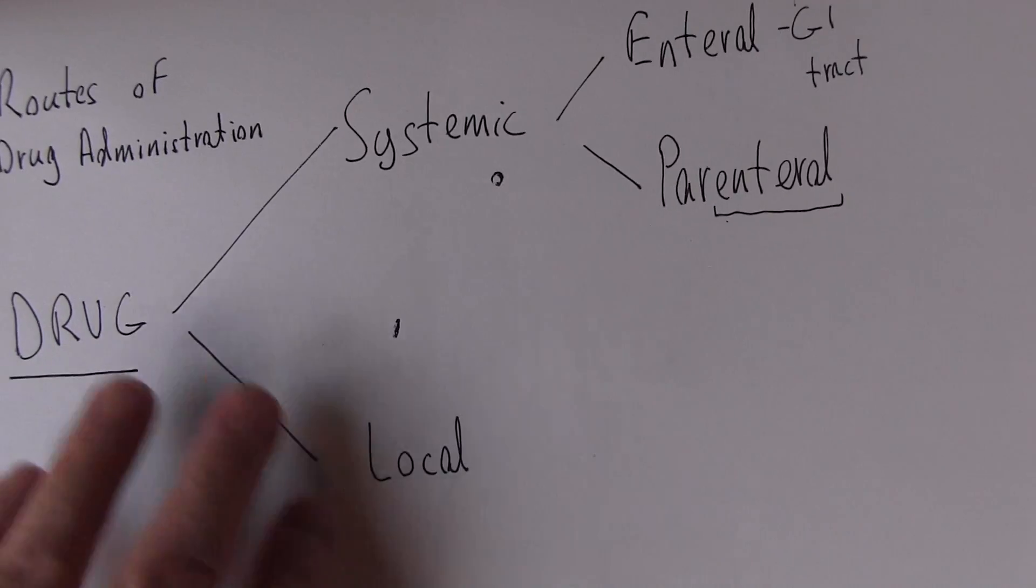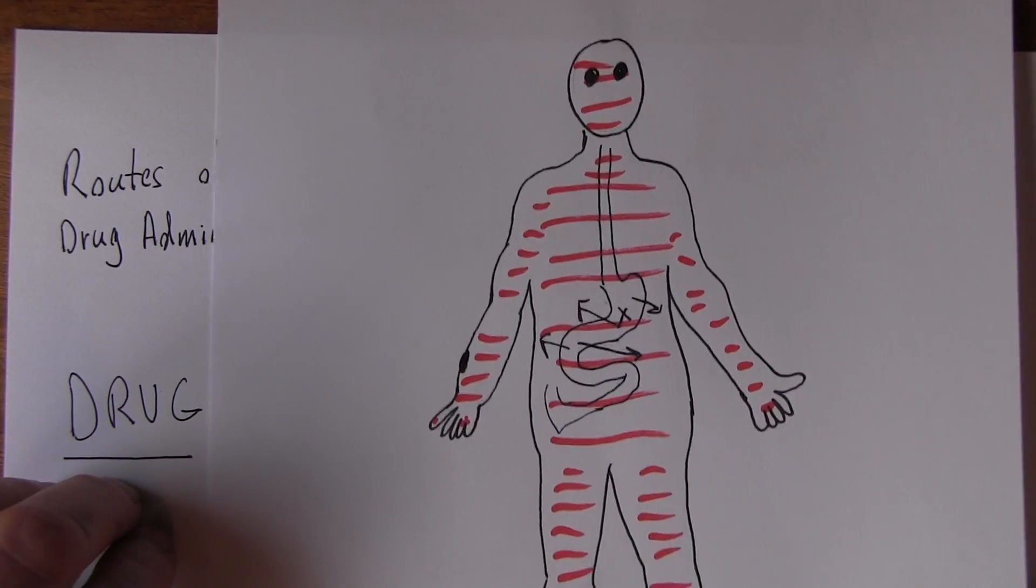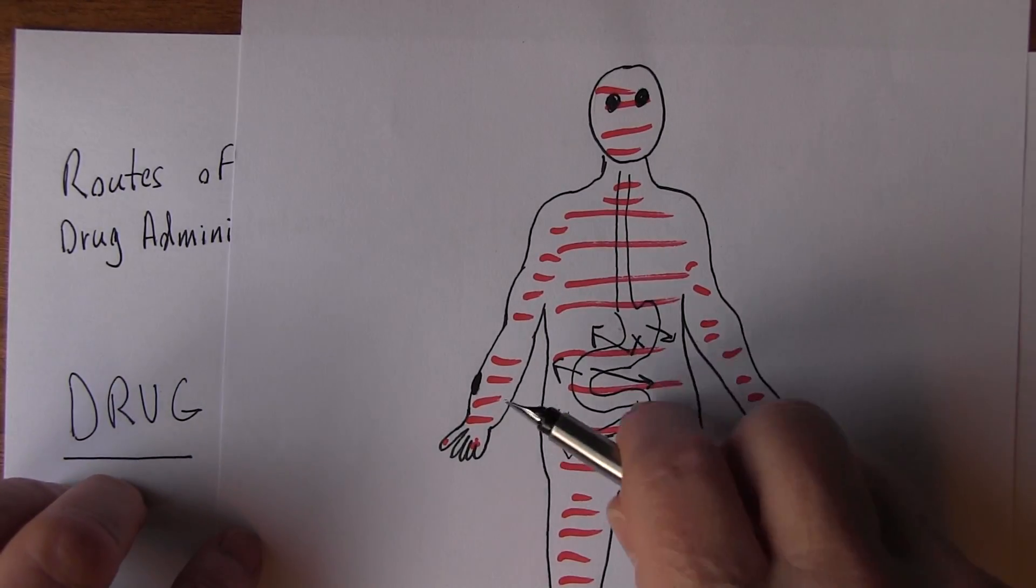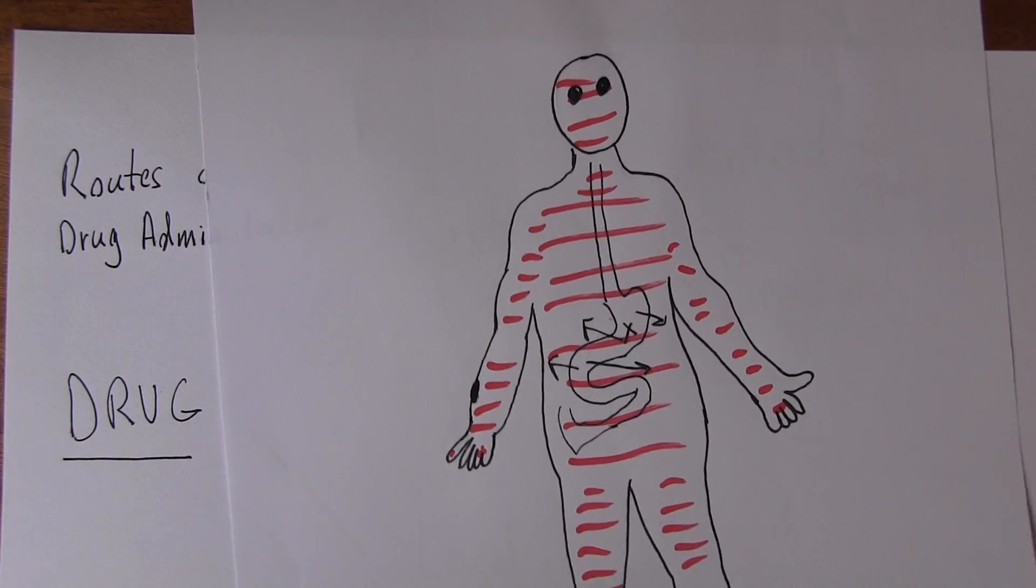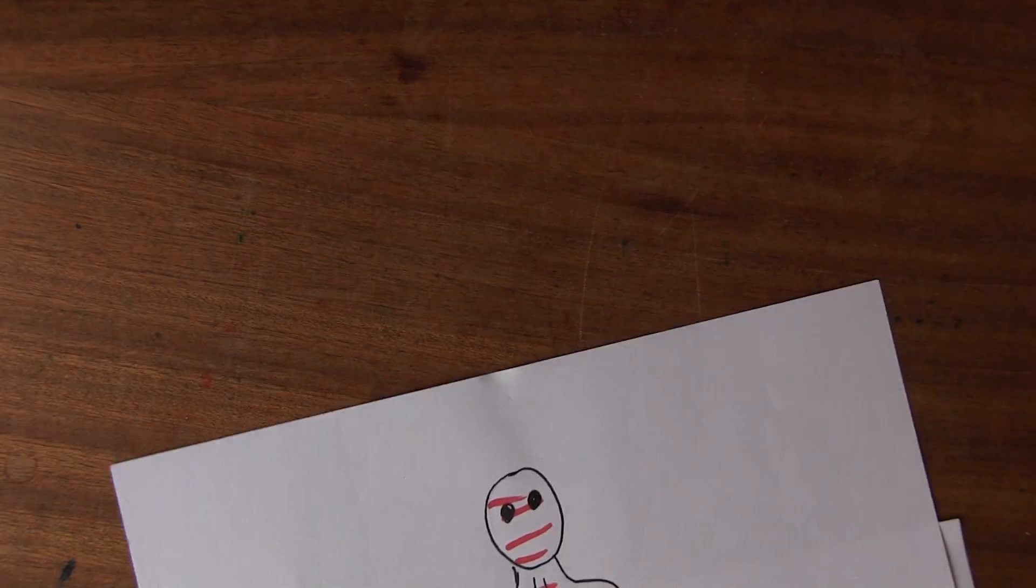The systemic is going around the whole body, going everywhere. Local is only affecting one part of the body. So how might we give drugs for local administration?